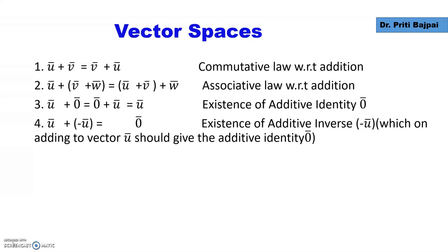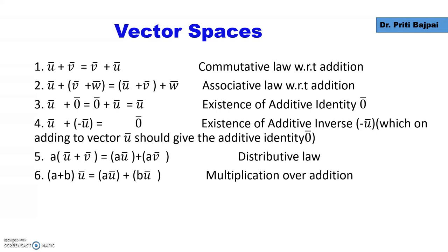There are four properties which you are familiar with from group theory. The first one is the commutative law, which means that in whatever order we add the vectors, the end result will be the same. The second property is the associative law — adding V and W first and then adding U gives the same result as adding U and V first and then adding W. There will also be an additive identity, meaning that if you add it to the vector, the vector remains the same. And an additive inverse should also exist, meaning that when we add it to the vector, we get the additive identity.